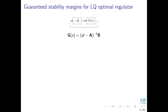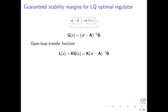The transfer function G is, in general, a matrix of transfer functions. Note that the output matrix C is seemingly missing in the formula, but it's just that we set it equal to the identity matrix — all state variables are present among the outputs of the system. The open loop transfer function L is then given as a product of the matrix of state feedback gains K and the matrix G of transfer functions.